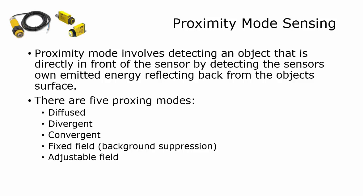It uses the object that you're sensing as the reflective object, so the light coming out of the emitter reflects off of the object you're sensing and comes back to the receiver.